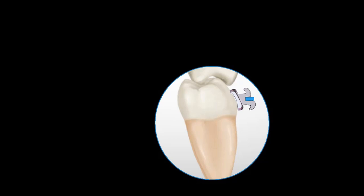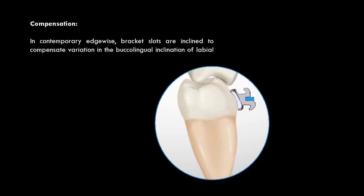So how you have compensated third order bends in contemporary edgewise brackets? In contemporary edgewise bracket, bracket slots are inclined to compensate variation in the buccolingual inclination of labial surfaces of the teeth.